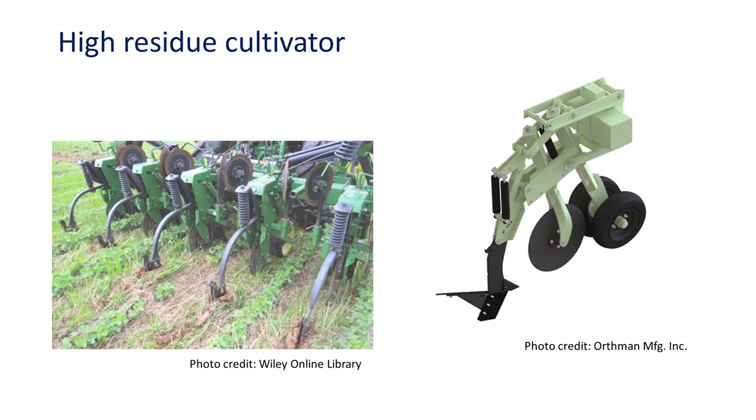Cultivators used in no-till and residue-covered fields must allow crop residue to flow through the implement without clogging. Untilled fields require greater penetration force compared to tilled fields. These cultivators have heavy shanks, toolbar frames, and other components for tool penetration. Down-pressure springs transfer weight from the toolbar to the individual row units. High-residue cultivators have a single shank with a wide sweep and a coulter in front of the shank to cut the residue and reduce plugging. Running the sweep too deep causes soil slabbing and poor weed control because the roots do not separate from the soil clod.